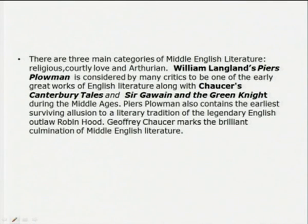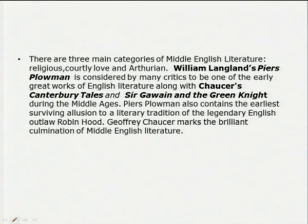There are three main categories of Middle English literature: religious, courtly love, and authoritarian. William Langland's Piers Plowman is considered by many critics to be one of the early great works of English literature, which falls in this period along with Chaucer's Canterbury Tales and Sir Gawain and the Green Knight, dating during the Middle Ages. Piers Plowman also contains the earliest surviving allusion to the literary tradition of the legendary English outlaw Robin Hood. Geoffrey Chaucer, however, marks the brilliant culmination of Middle English literature.